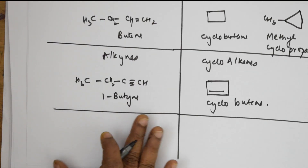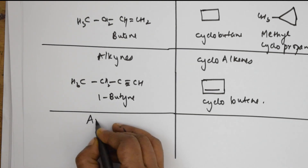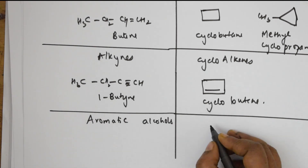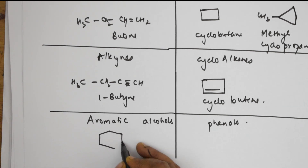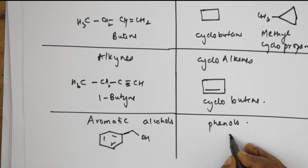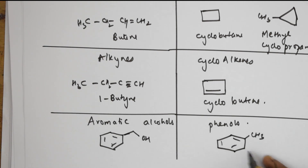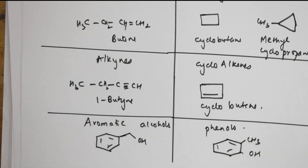Aromatic alcohols are isomeric with phenols. For example, phenylmethanol (benzyl alcohol, with an OH group on the side chain) is isomeric with orthocresol (a phenol with the OH group directly on the benzene ring). These two are functional isomers - same molecular formula but different functional groups.